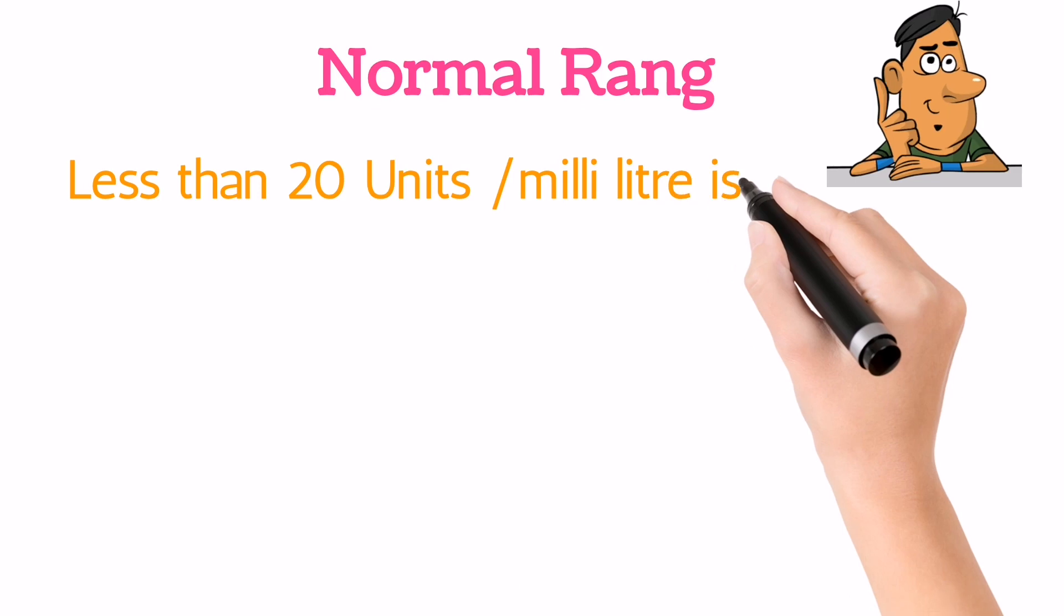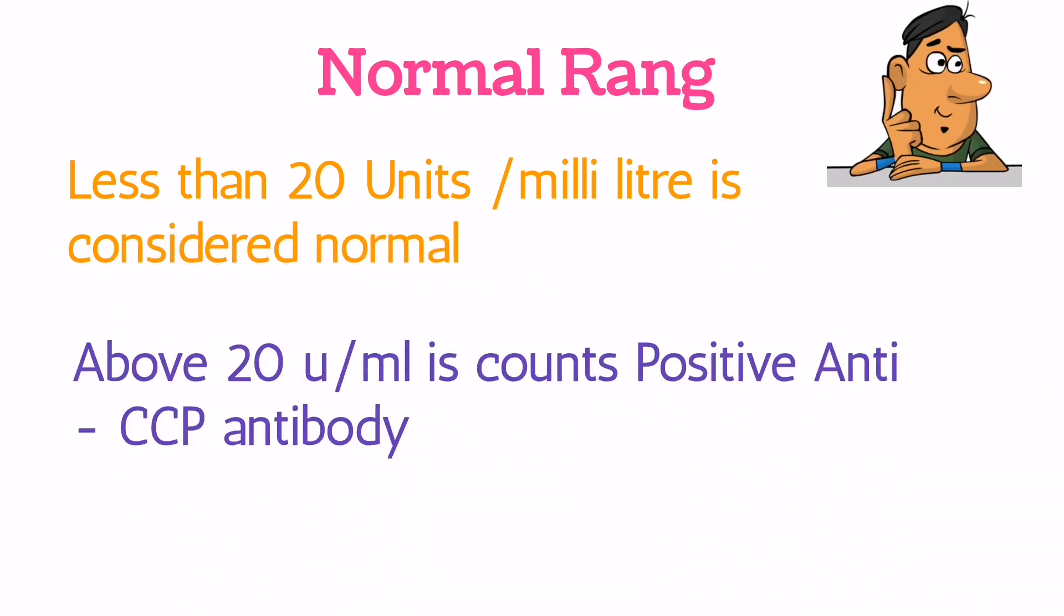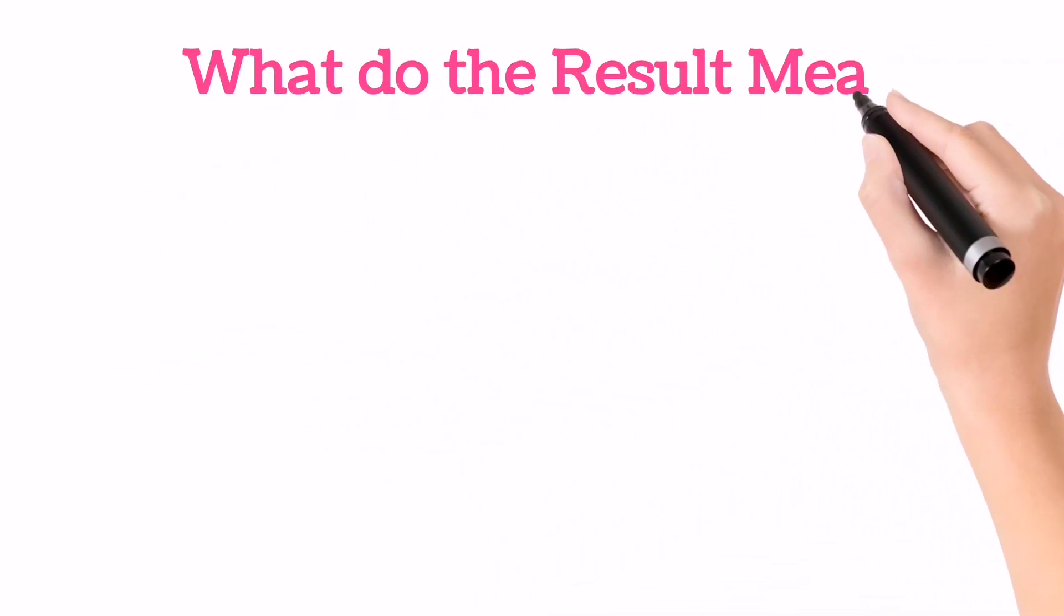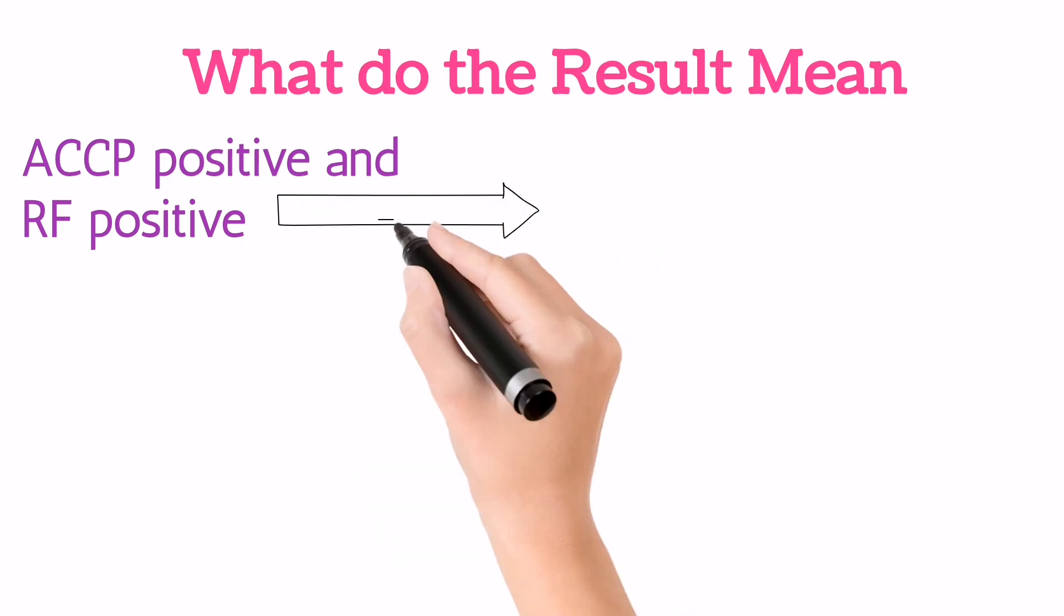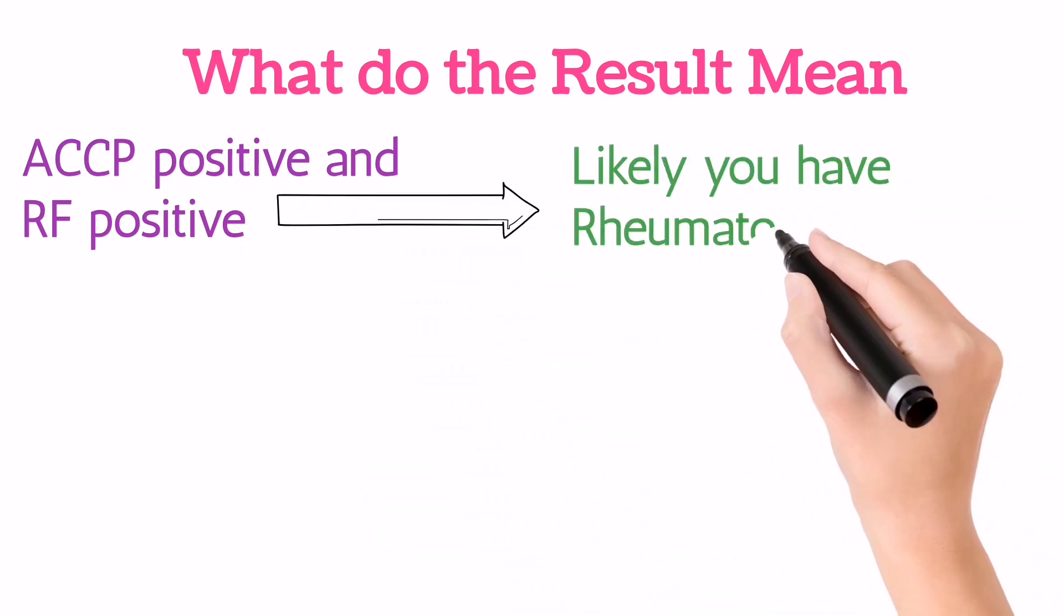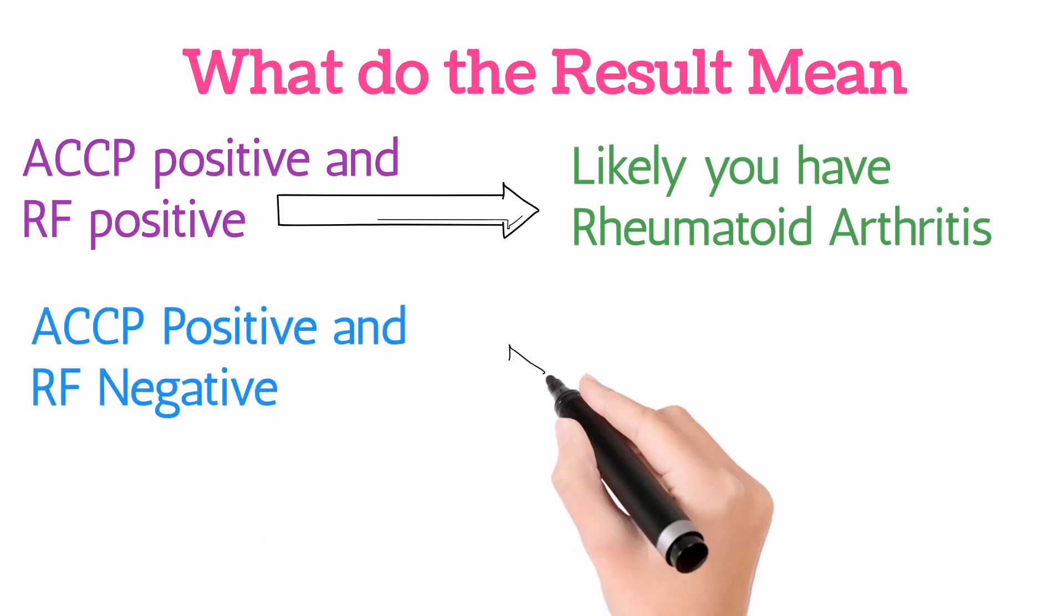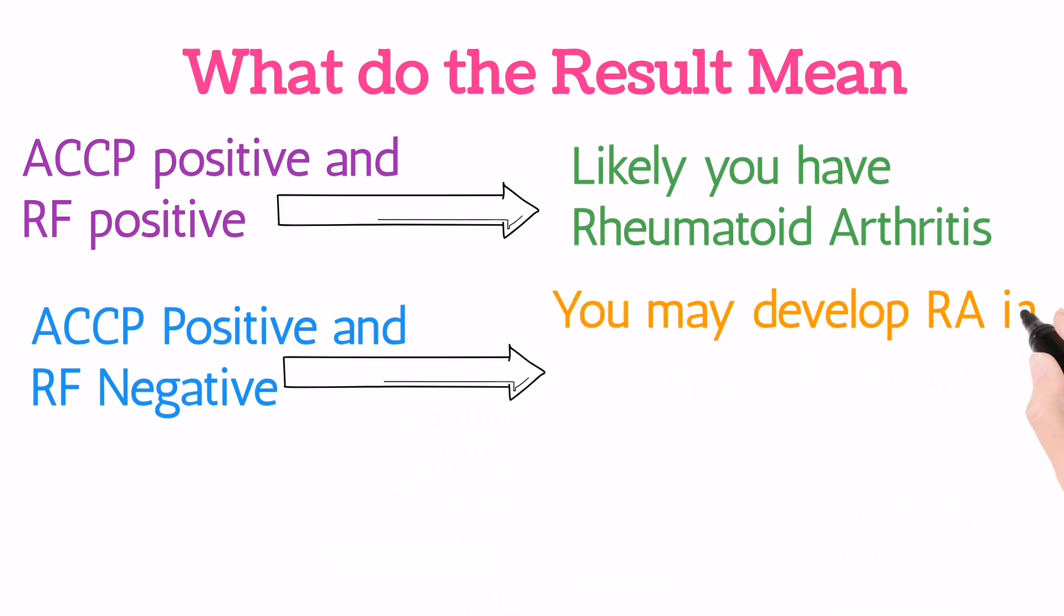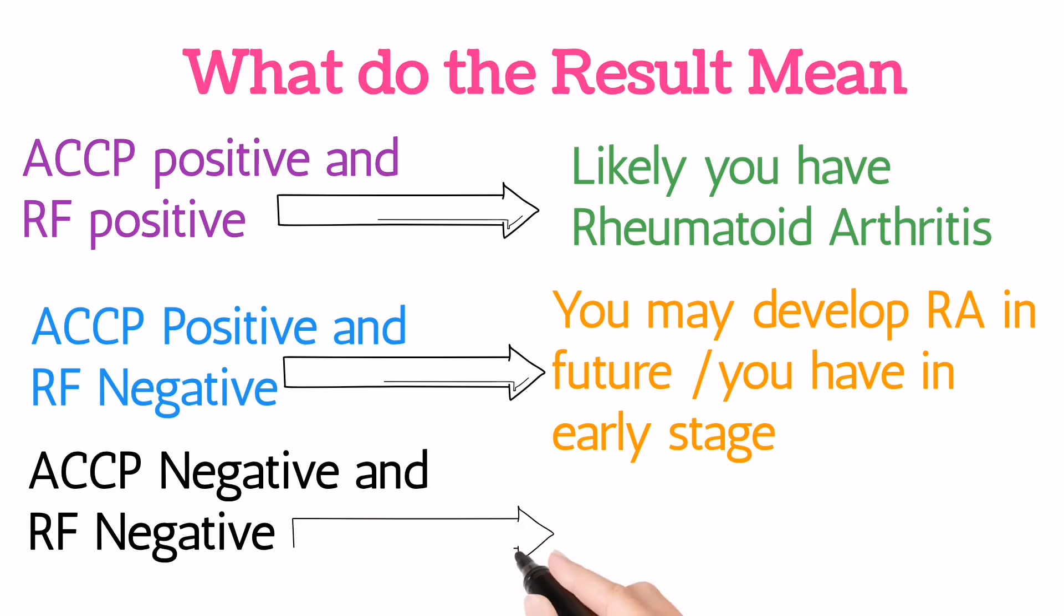Now how to report the results? When anti-CCP test is positive and RF factor test is also positive, it means you have rheumatoid arthritis. If the anti-CCP test is positive but RF test is negative, it means you may develop disease like rheumatoid arthritis in the future or you have it in an early stage. When both the anti-CCP antibody test and RF test are negative, it means you have no disease.